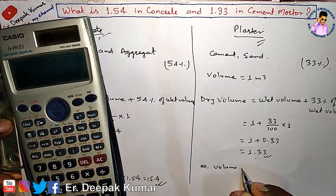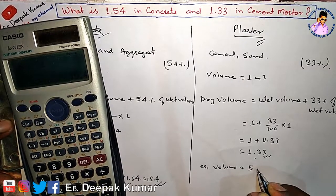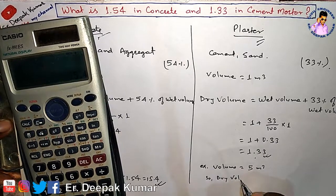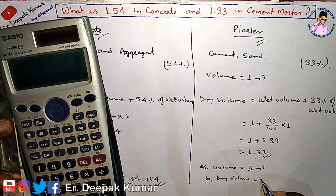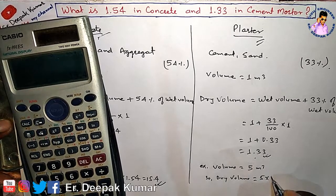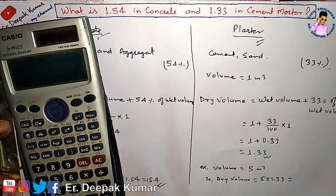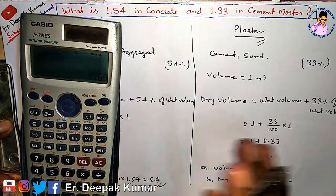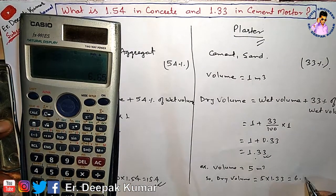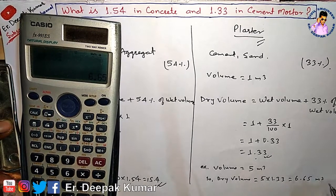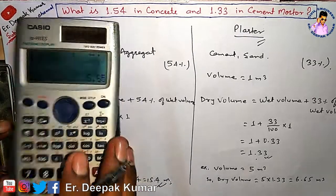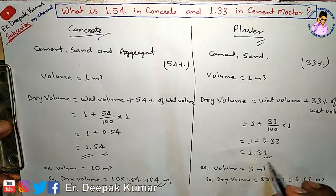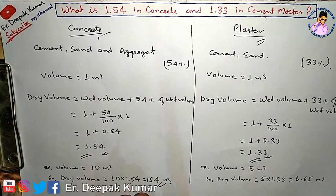Similarly, if volume equals 5 meter cube for mortar or plaster, then dry volume = 5 × 1.33 = 6.65 meter cube. So this is how we get 1.54 and 1.33.